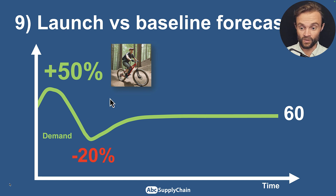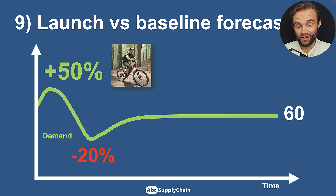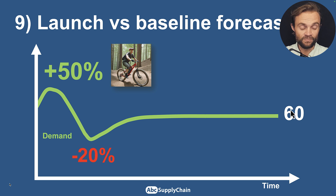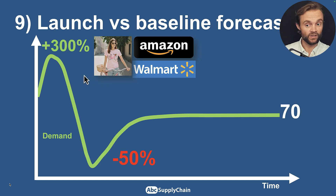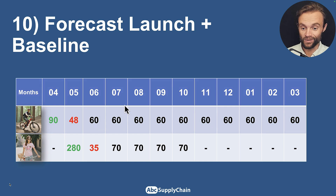Be careful because the forecast for the launch — the first month or week — can be very different from subsequent months. Usually there's a big peak at the beginning: a 'wow effect' for consumers, or distributors buying a lot upfront, then sales crash because they have too much inventory before returning to normal. For example, if the baseline is 60, the launch might be plus 50% — so 90 units at the beginning, then minus 20% giving 48 units after. For fast fashion, the launch can be even stronger: plus 100%, then minus 50%.